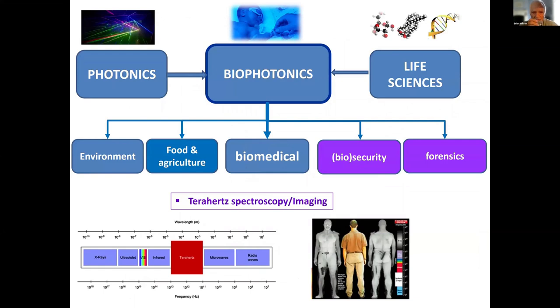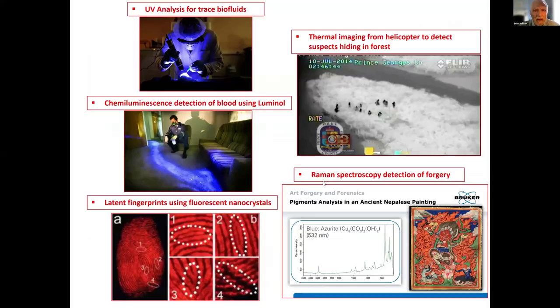Looking at biosecurity and forensics. Terahertz spectroscopy, which is very long wavelength compared with the visible part of the spectrum, has the advantage that you can image through material. For example, you can look at hidden objects such as weapons. That's been developed quite a lot for security, for example, at airports.